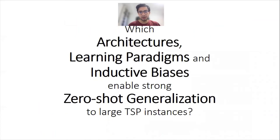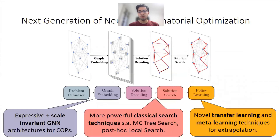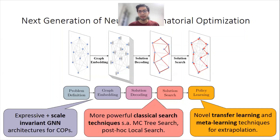The goal of the work is really to ask questions such as which architectures, learning paradigms, and inductive biases are enabling these neural combinatorial optimization models to generalize better for TSP, to generalize to larger TSP instances. We hope that by introducing this new challenge to the community, we can push forward to the next generation of such techniques — asking how to build graph neural networks or transformers that are invariant to the scale of a combinatorial problem, thinking about more powerful search techniques which combine neural networks and classical algorithms, or even more powerful learning algorithms for these techniques.